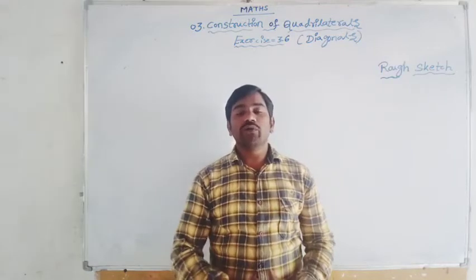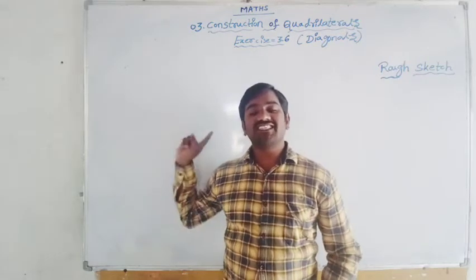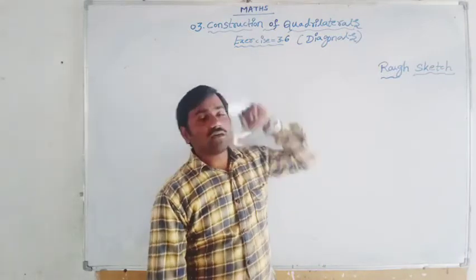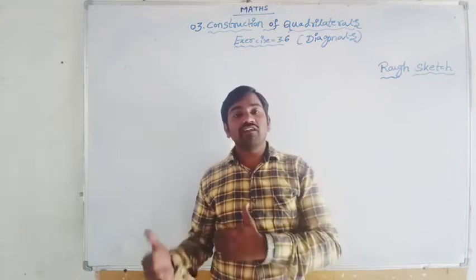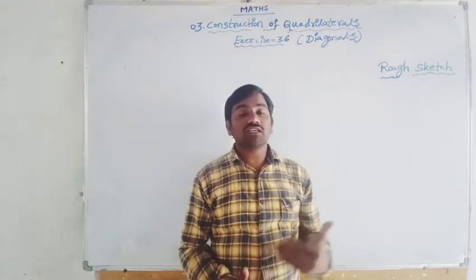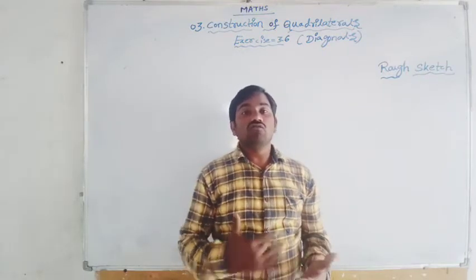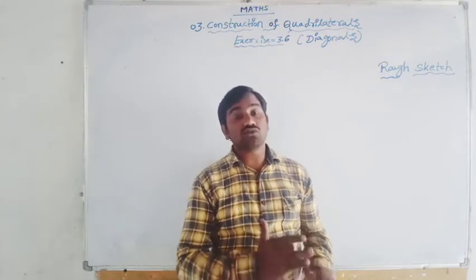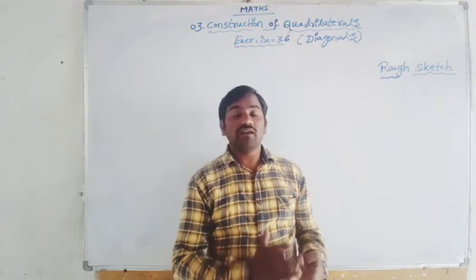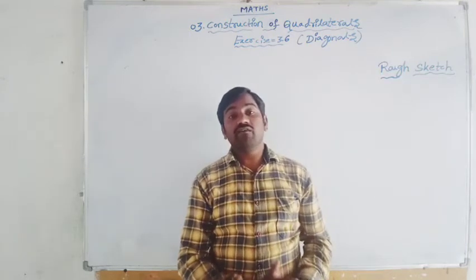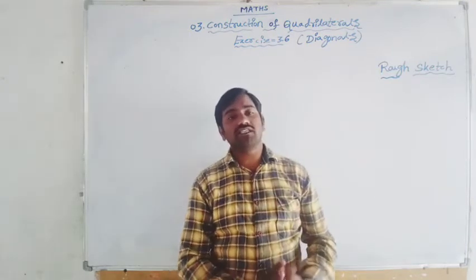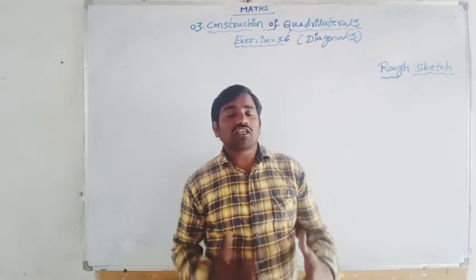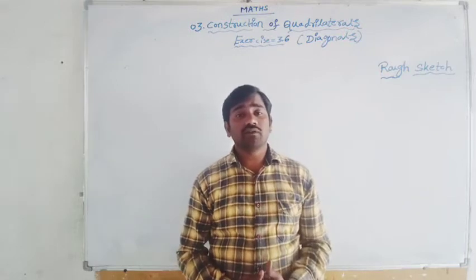Hi children, today we are going to learn 8th class, 3rd chapter — that is construction of quadrilaterals — in the class exercise, exercise number 3.6. Now in the previous exercise we have constructed the quadrilateral when 4 sides and 1 angle are given, 4 sides and 1 diagonal are given, when 3 sides and 2 diagonals are given, when 3 angles and 2 sides are given, when 3 sides and 2 angles are given. This kind of quadrilaterals we have constructed.